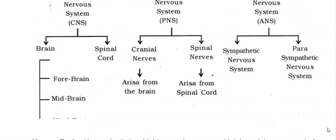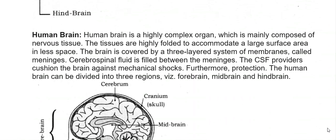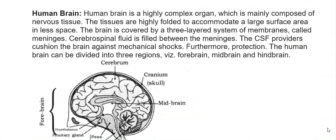The human brain is a highly complex organ mainly composed of nervous tissue. The tissues are highly folded to accommodate a large surface area in less space. The brain is covered by a three-layered system of membranes called meninges, with cerebrospinal fluid (CSF) filled between them, providing cushioning against mechanical shocks. The human brain can be divided into three regions: forebrain, midbrain, and hindbrain.